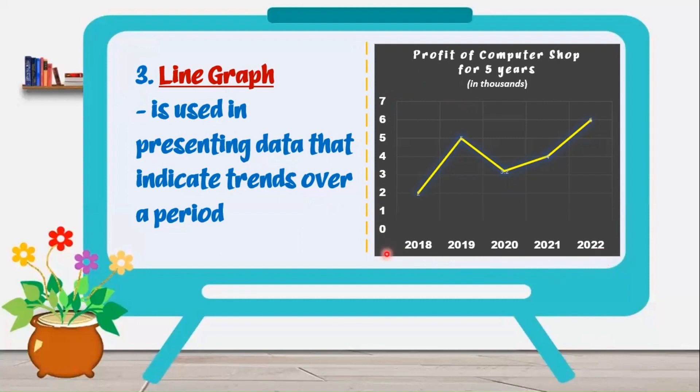Now we examine the trend of the profit. For 2018, its profit is 2,000, and it rises up in 2019. It falls down in 2020 to 3,200, and it rises again in 2021 by 4,000 until it reaches 6,000 in the year 2022. So the trend here is still rising.